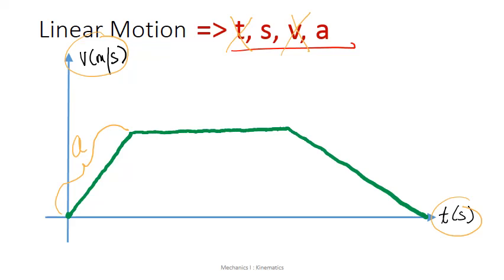The acceleration is represented by the gradient of a VT graph. When the train was accelerating, it has a positive acceleration. When the train was travelling at constant velocity, the acceleration was zero. And just before the train reaches the destination, it decelerates to a complete stop. So the gradient of a VT graph has the acceleration information.